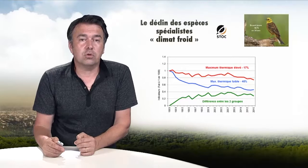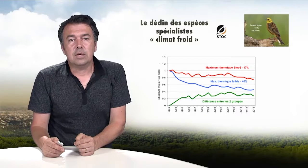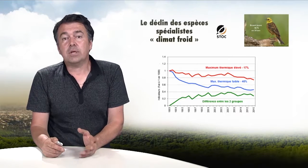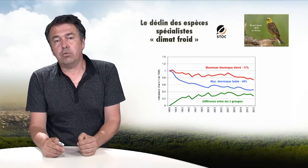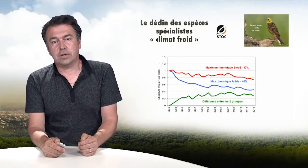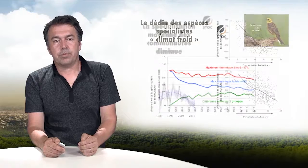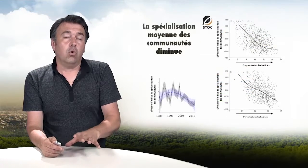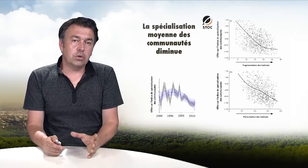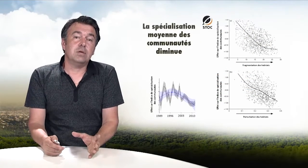This is a typical example: the yellowhammer, a species that likes cold weather and that has been declining sharply in France over the past 25 years.